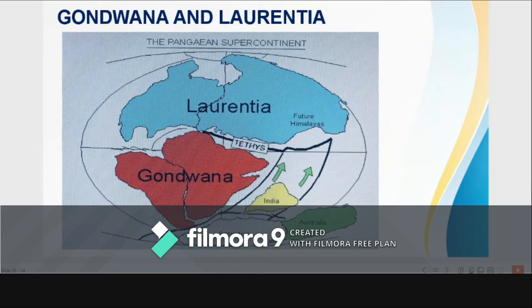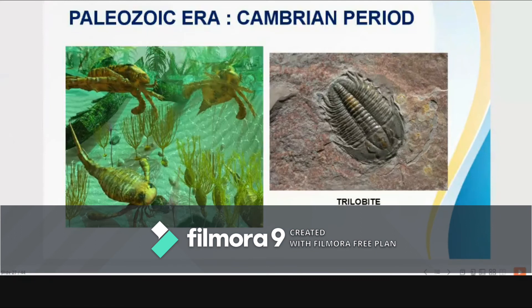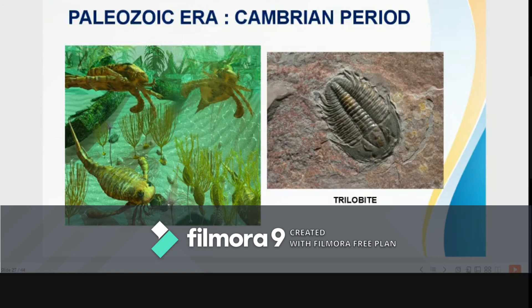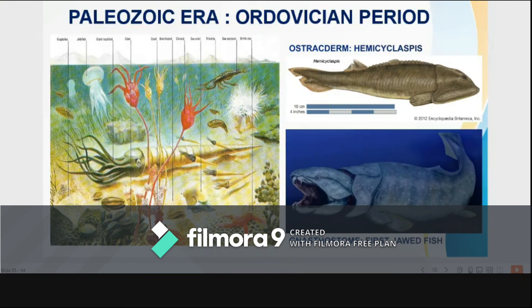The Cambrian period is characterized by low lands, extensive seas, mountain building, mild climate, abundant marine algae and invertebrates including trilobites. Most of the present major phyla were represented. Trilobites, by the way, are a group of extinct marine arthropods.